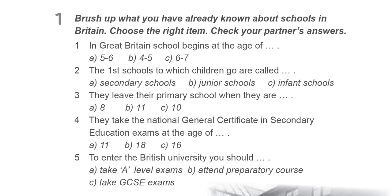The most famous British public schools include Harrow, Winchester and Eton, which date back to the 15th century. Many people in Britain are against public schools. They believe that all children in the country should have equal opportunities at the start and go to a usual British comprehensive school.